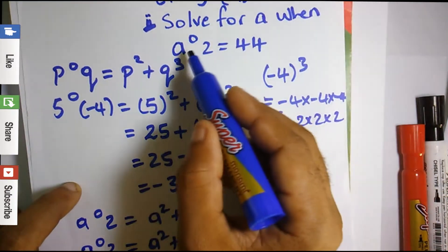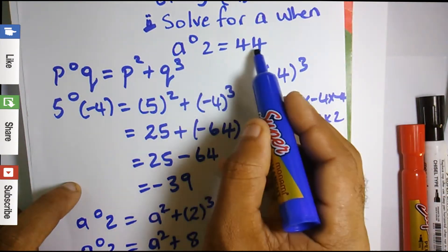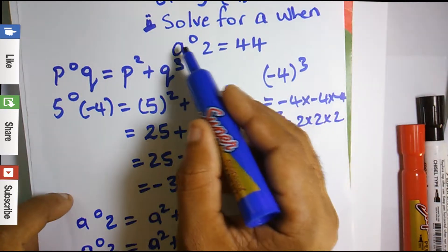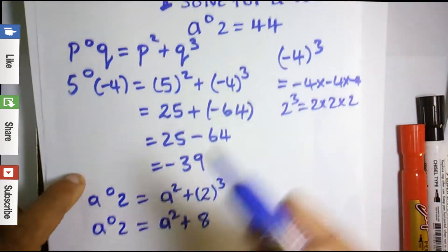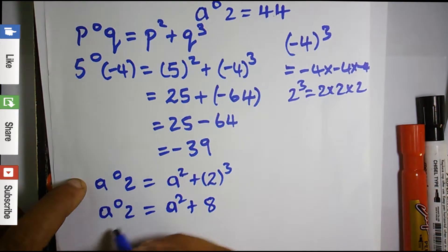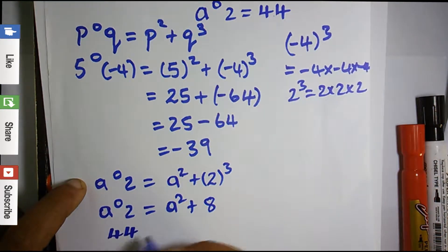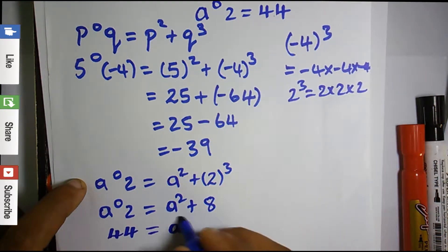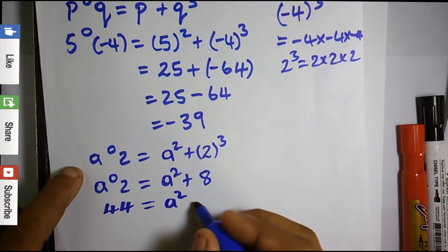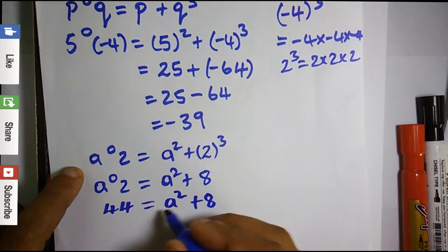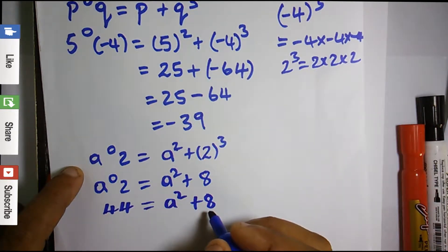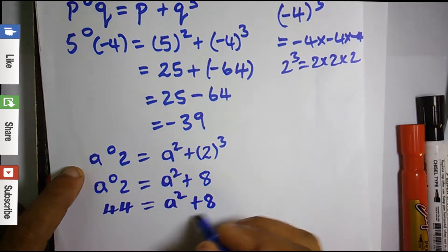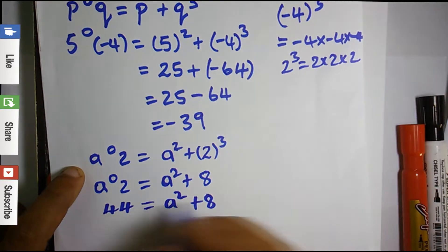2 cubed is 2 multiplied by itself three times, which is 8. The question states a O 2 = 44, so wherever we see a O 2 we replace it with 44. That gives us: 44 = a² + 8.